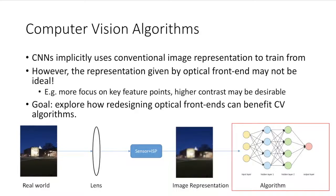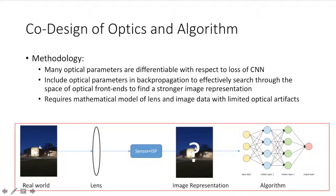In general, the majority of computer vision research has focused on optimizations purely in the algorithm domain. However, when we consider the computer vision system as a whole, there is room for further optimization by considering co-optimization of the lens and ISP in addition to the algorithm. A lot of this can be achieved because many optical parameters are differentiable with respect to the loss of the convolutional neural network. As such, we can include optical parameters in backpropagation to effectively search through the space of optical front ends to find a stronger image representation.